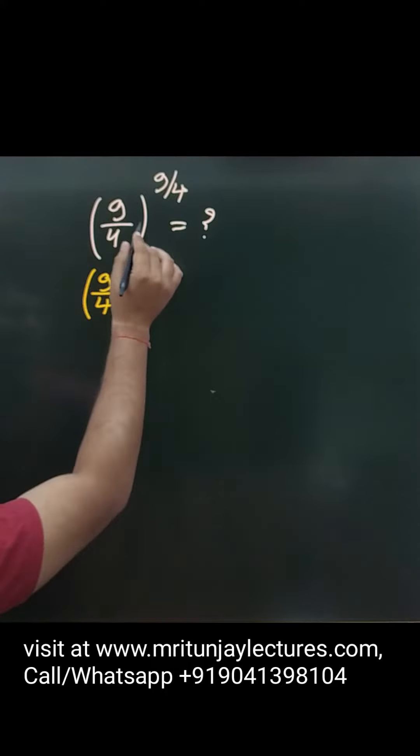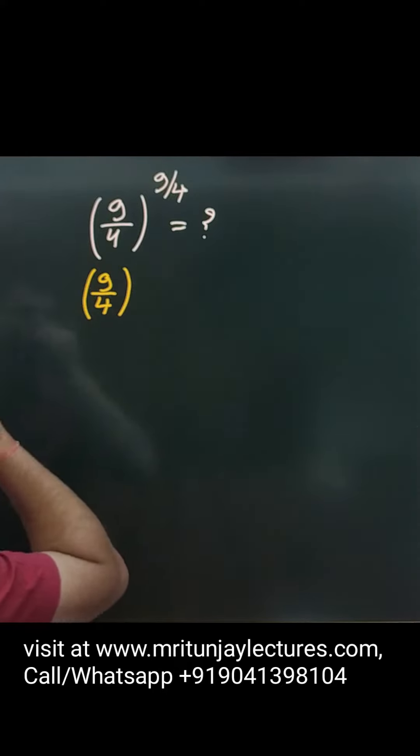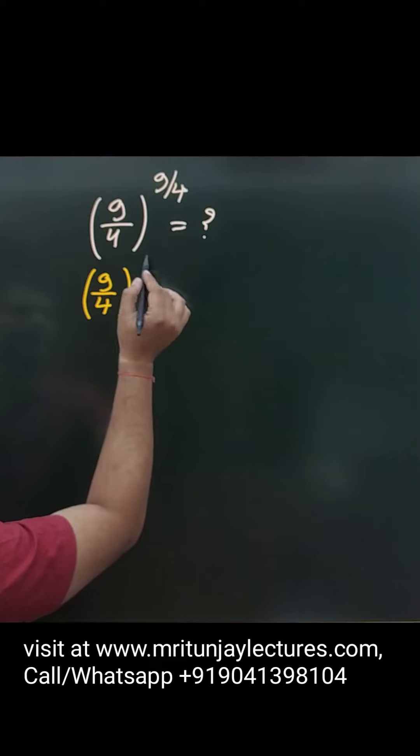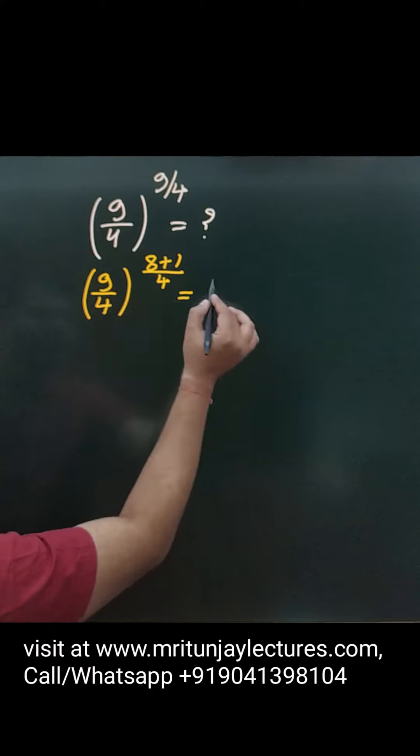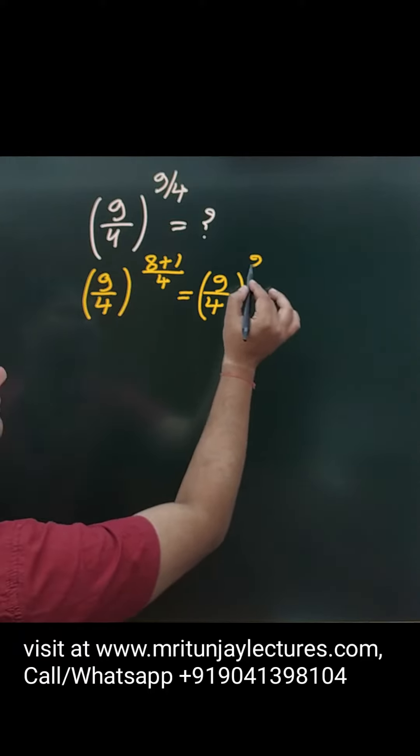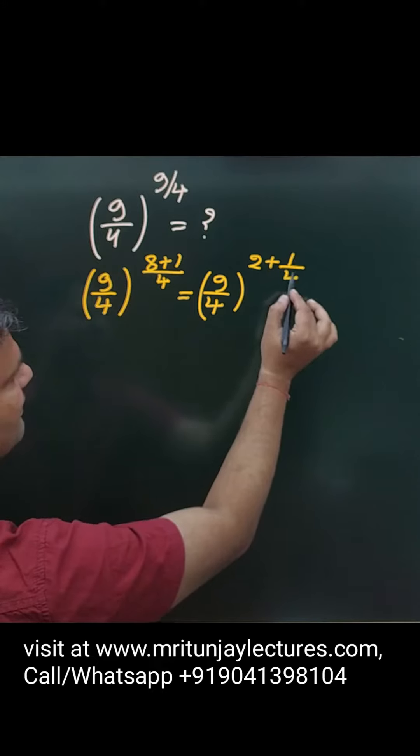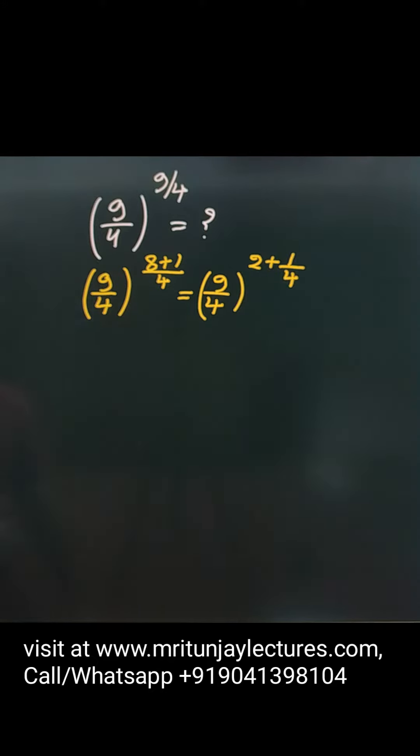To whole power 9 by 4 is written as, simply you can write now here that is 8 plus 1 divided by 4. OK, 9 by 4 to whole power, that is 2 plus 1 by 4. Here, after that.